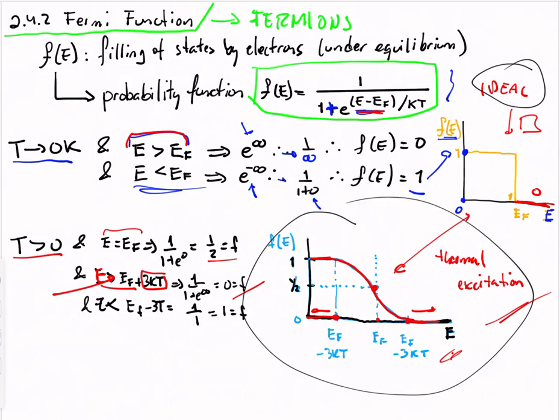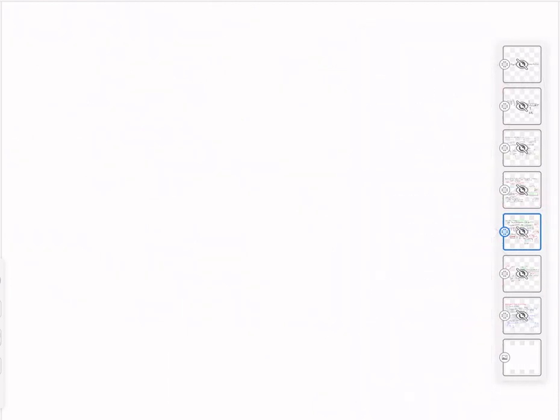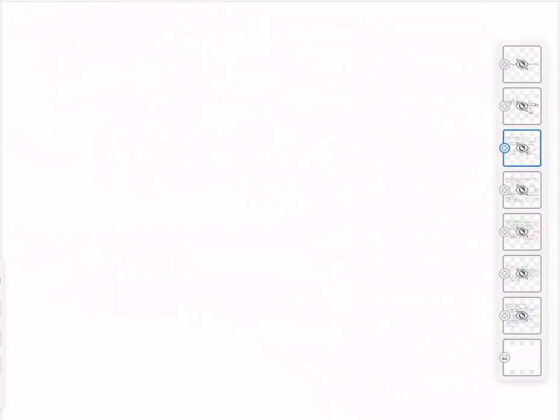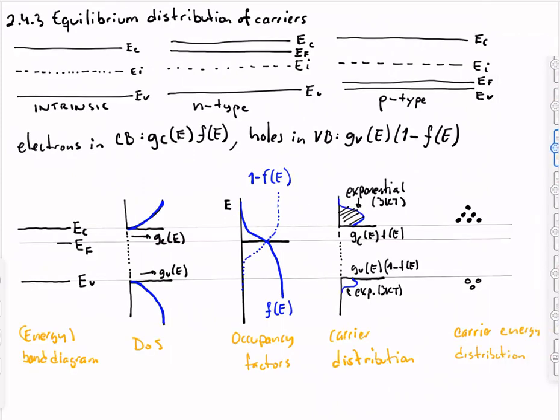Let me see here, look, this will be the ideal which is at zero Kelvin and look how it gets broader.